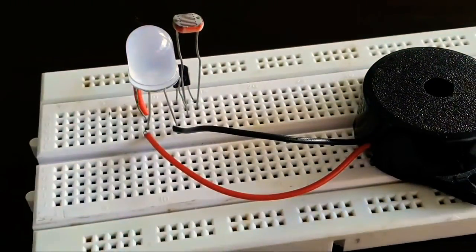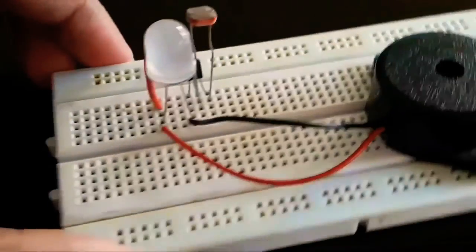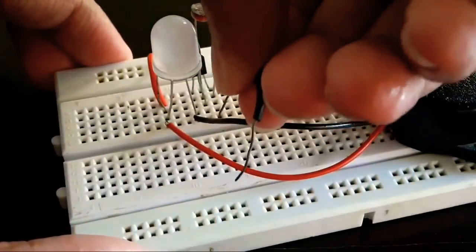Connect another wire from the emitter of the BC507 transistor to the negative rail of the breadboard.